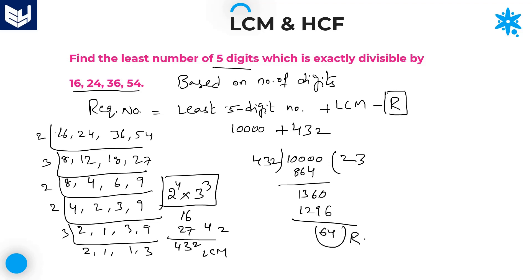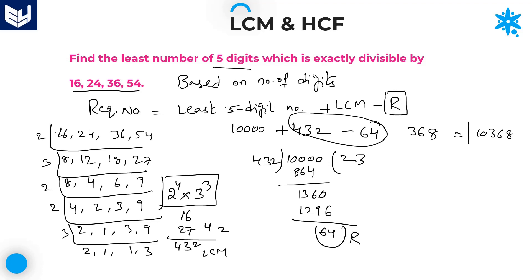64 is the remainder that you need to subtract from the LCM: 432 minus 64 equals 368. Therefore, 10,000 plus 368 equals 10,368. So 10,368 is the least five-digit number which is exactly divisible by 16, 24, 36, and 54.